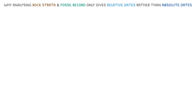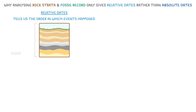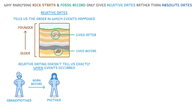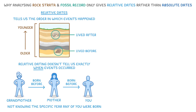Finally, let's take a look at why analyzing rock strata and the fossil record only gives us relative dates rather than absolute dates. Relative dates tell us the order in which events happened — what came first, second, third, and so on. When we look at rock layers, we can say that the bottom layers are older than the younger layers above them. And similarly, we can say that the fossils in the upper layers lived after the fossils in the bottom layers. However, relative dating doesn't tell us exactly when these events occurred. It's like knowing that your grandmother was born before your mother, and your mother was born before you, but not knowing the specific year any of you were born.